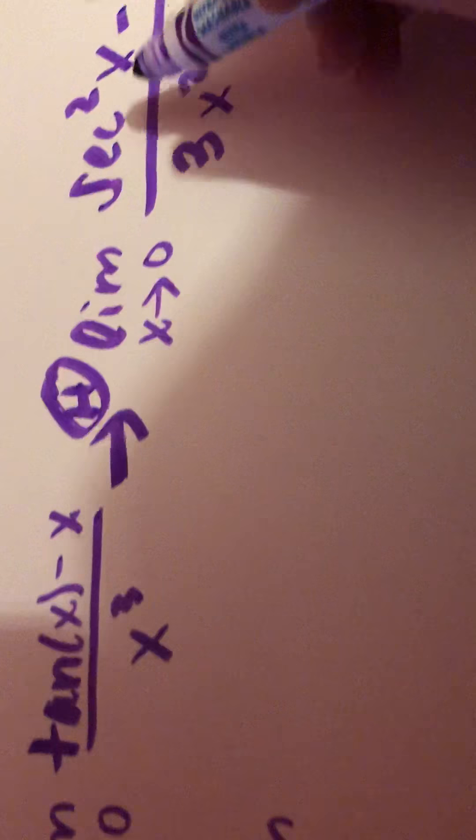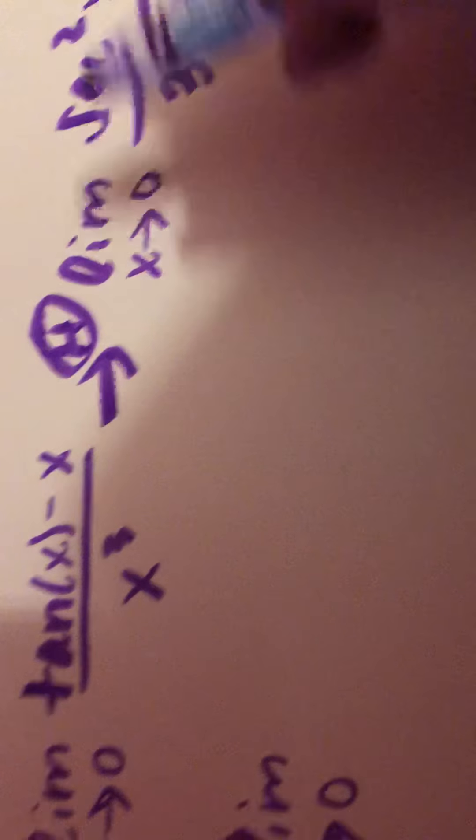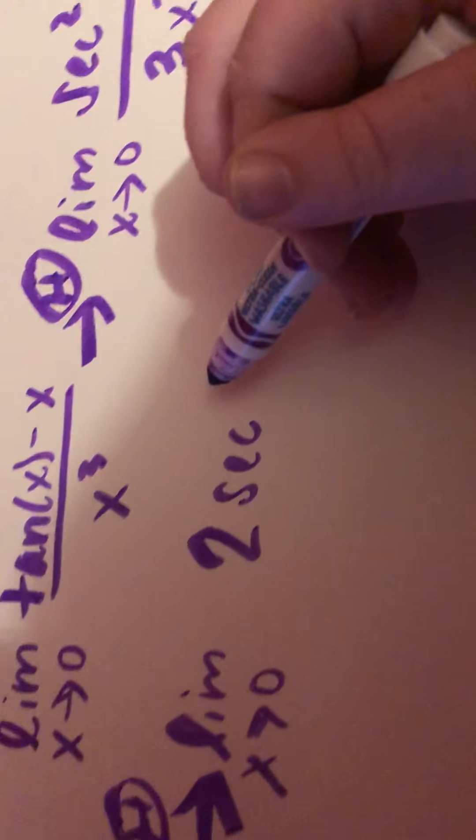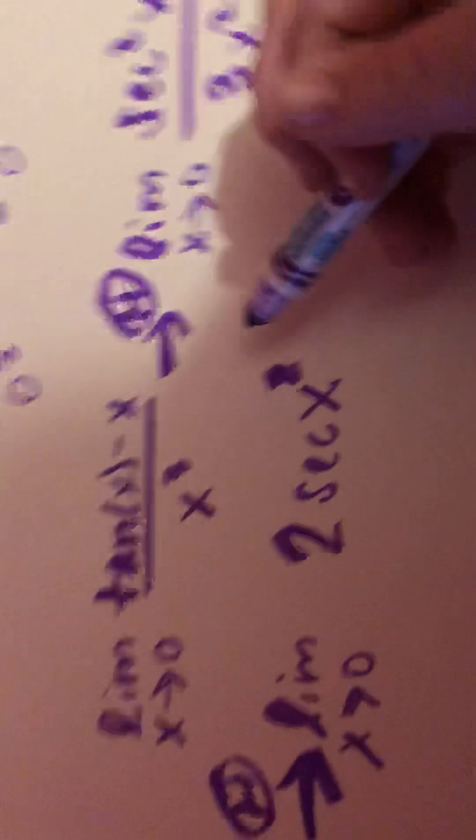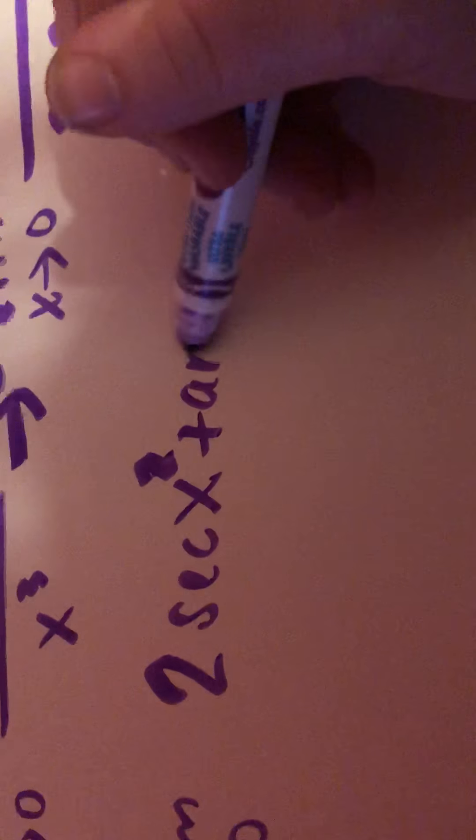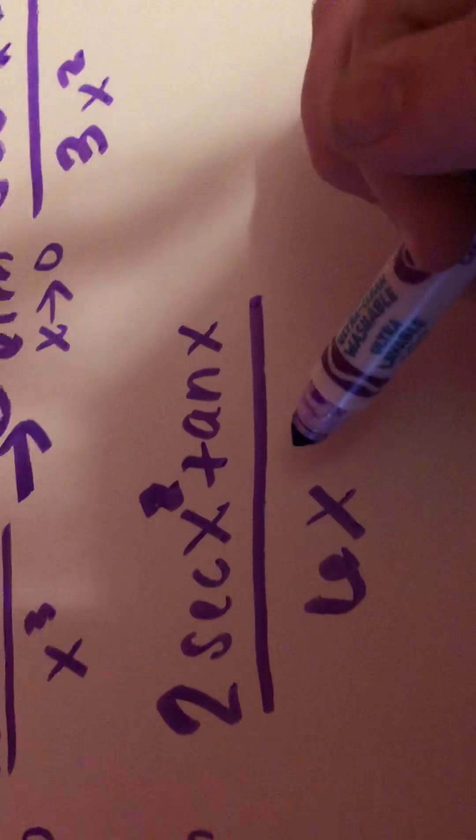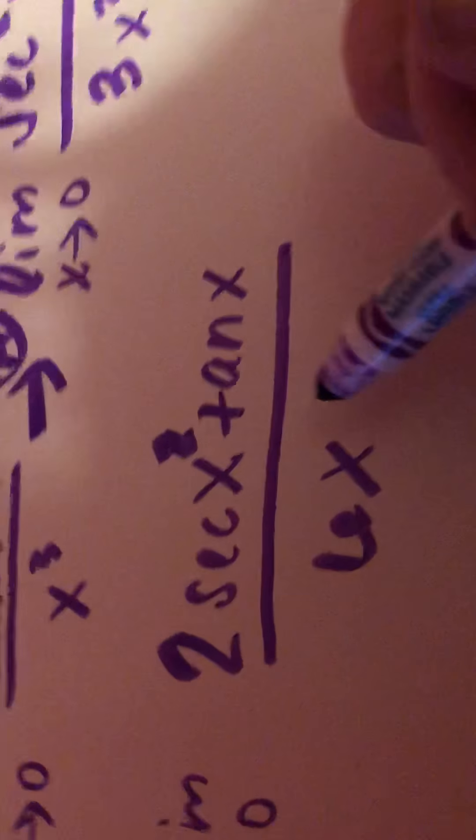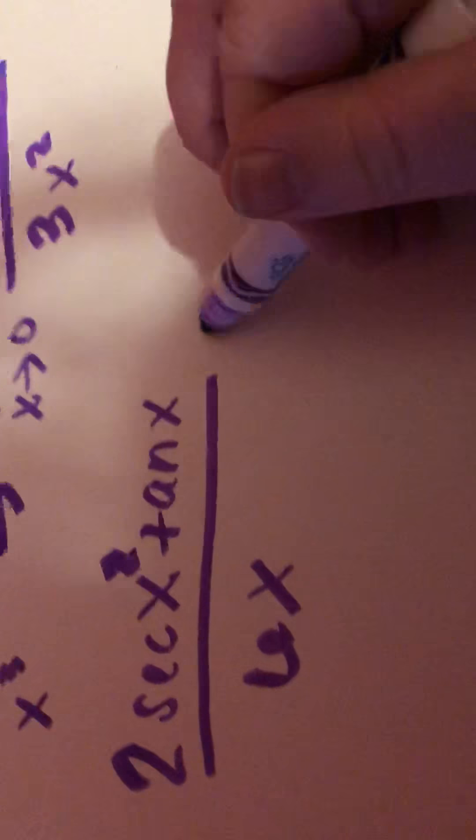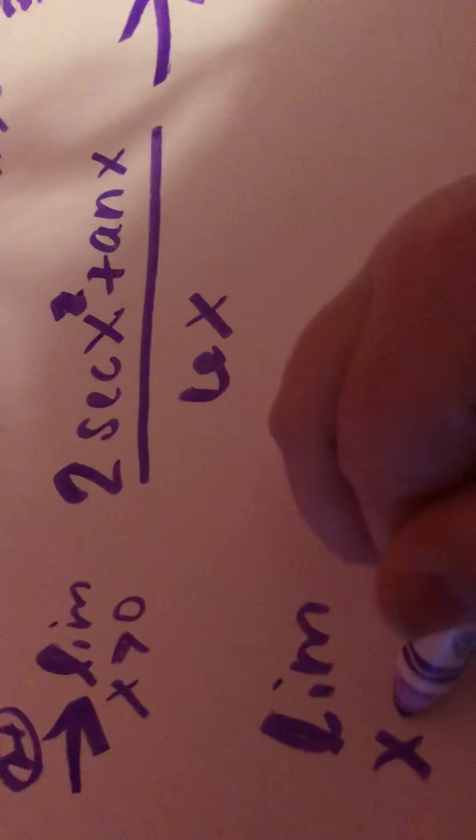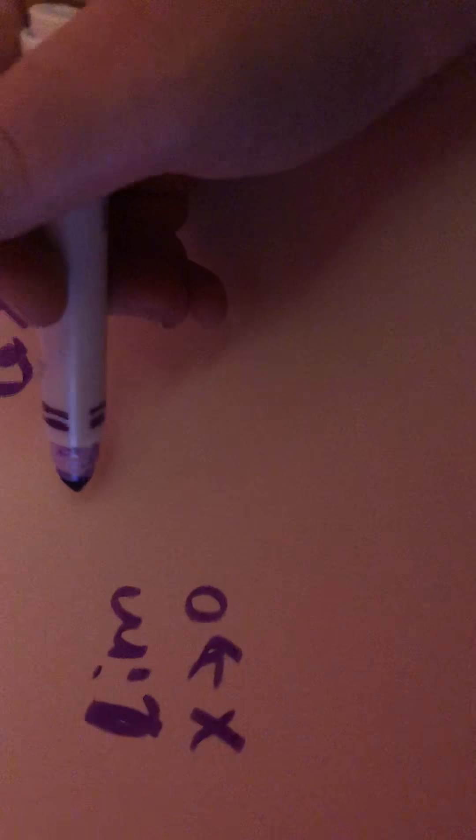So secant squared, when we find the derivative of that, we get 2 secant x squared tan of x over 6x. Now this still gives us 0 over 0, so we have to do it again. We can use this rule as many times as we can until we get a value that is not indeterminate.